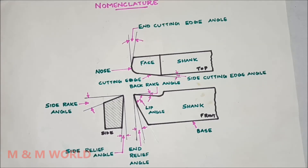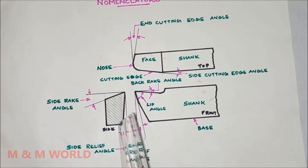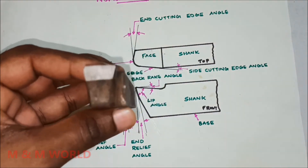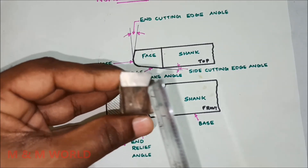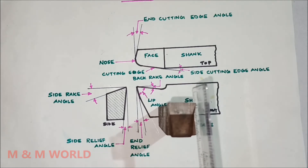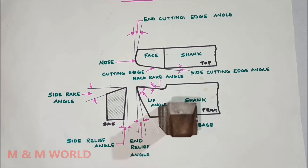The next one is the side relief angle. It is the angle between the portion of the side flank immediately below the side cutting edge and a line perpendicular to the base of the tool. In the side view, you can see the side flank and a line perpendicular to the base — this angle is the side relief angle.